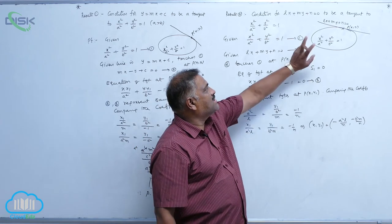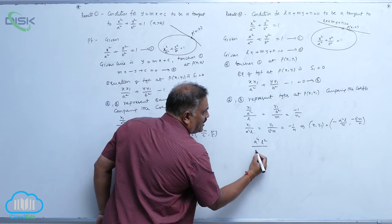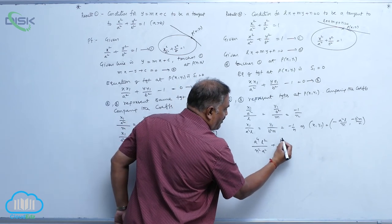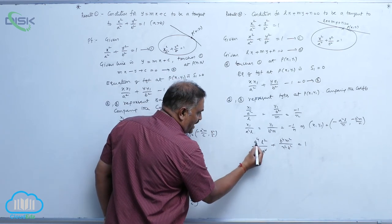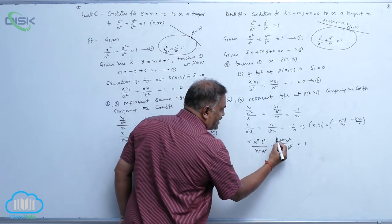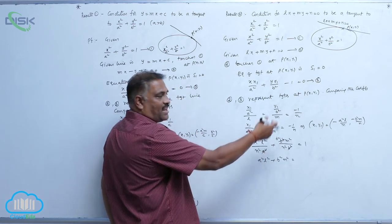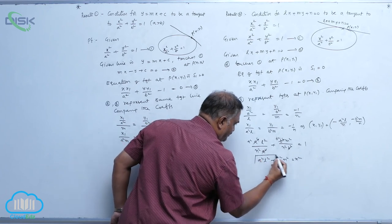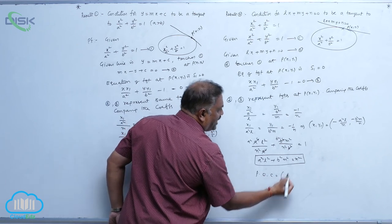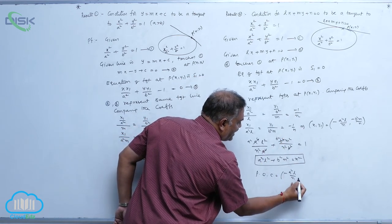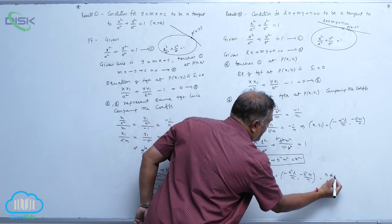This point lies on the curve. Substituting: a⁴l²/(n²·a²) + b⁴m²/(n²·b²) = 1. After cancellation, a²l² + b²m² = n². The point of contact is given by (-a²l/n, -b²m/n), where n ≠ 0.